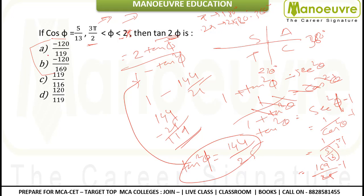With denominator −119/25, the answer matches option A. In your exam, avoid the conventional method of finding all individual trig values step by step — it's too lengthy. Instead, use shortcut methods to eliminate options and reach the correct answer with minimum working.